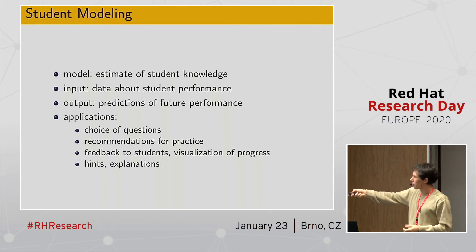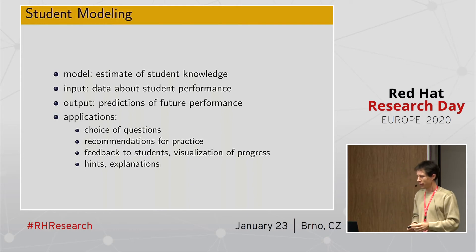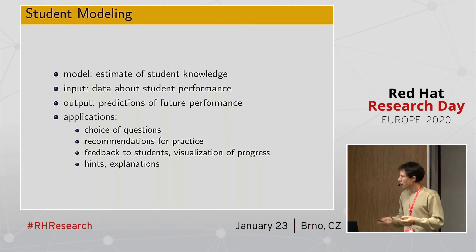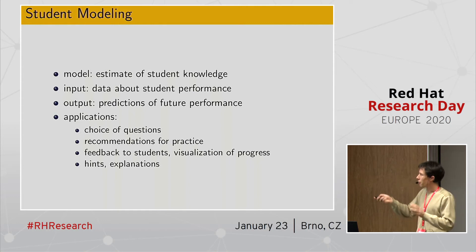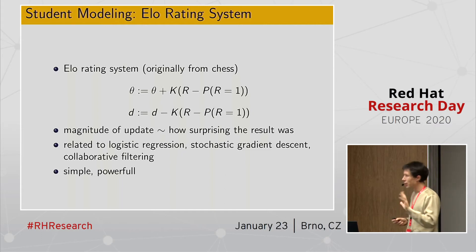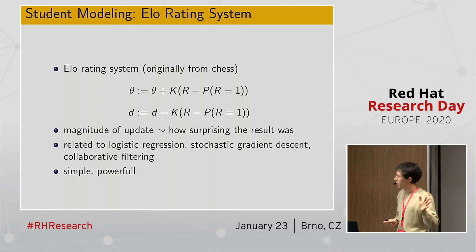As an output of the model, we typically have predictions of future performance. Based on an estimate of your knowledge, the model predicts, for example, that there's a 40% chance you'll be able to solve a given fractions problem. Once we have this kind of model, we can use it for adaptive behaviors like question selection, recommendations, feedback, visualizing progress, or providing personalized hints. In the community, there are many approaches — Bayesian techniques, even neural networks. But one approach which is very simple and yet often reasonably powerful is the ELO rating system, originally from chess.